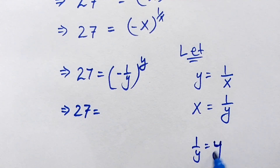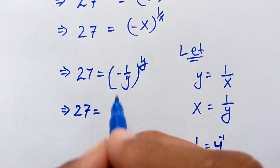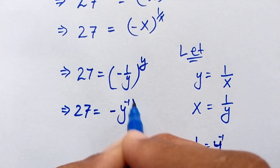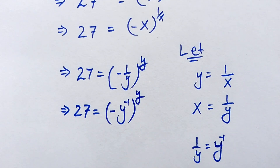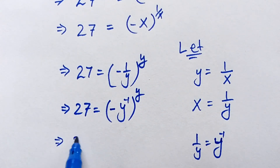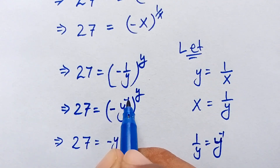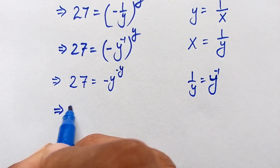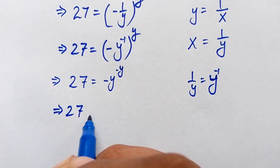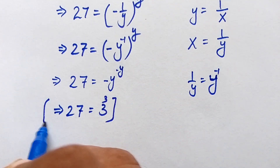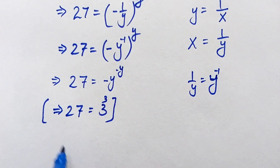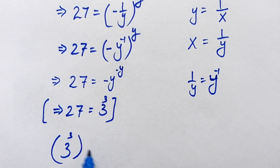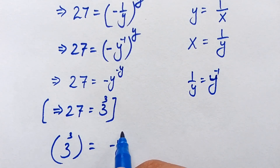Now, minus 1 over y is equal to minus y to the power of minus 1, so this becomes minus y to the power of minus 1, to the whole power of y. So 27 is equal to minus y to the power of minus y. In the next step, 27 is equal to 3 to the power of 3, so we put 3 to the power of 3 in place of 27. This becomes 3 to the power of 3 is equal to minus y to the power of minus y.